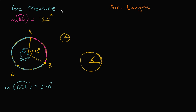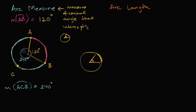Arc measure only depends on the measure of the central angle that intercepts the arc. Arc length, on the other hand, depends on both the measure of that central angle and the size of the circle — you're actually talking about a length, whereas arc measure is a degree measure.